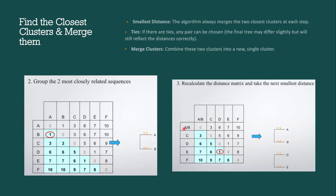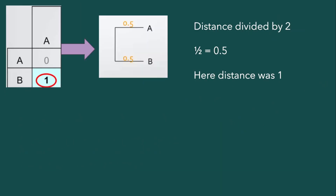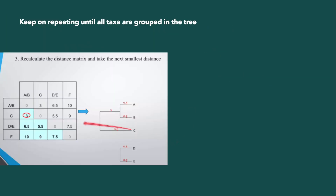Comparing AB with all sequences this way gives us the numbers for the new matrix. For C compared with D, we can take that value directly — it's 5. When done, we have the updated distance matrix showing AB cluster, C, DE cluster, and F.